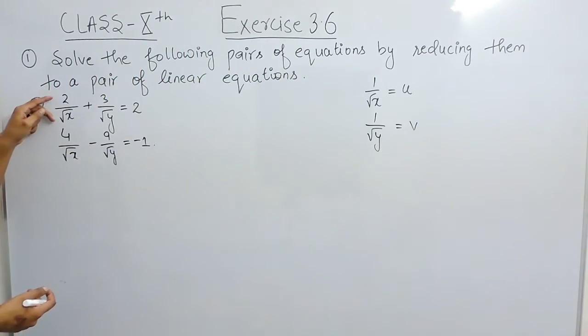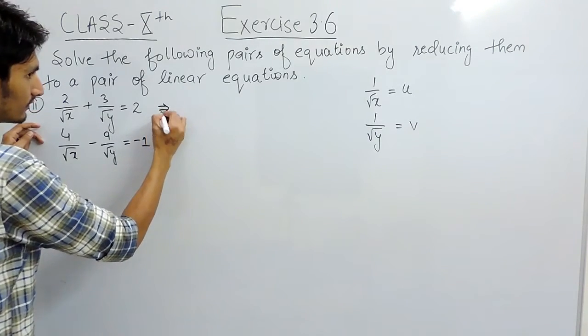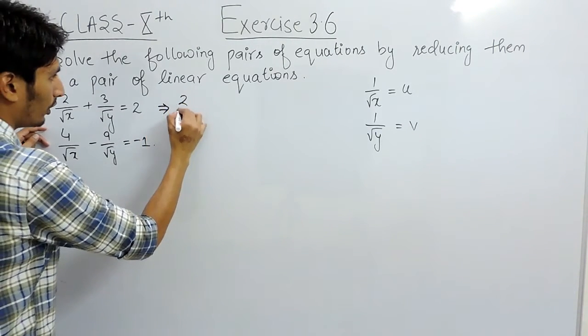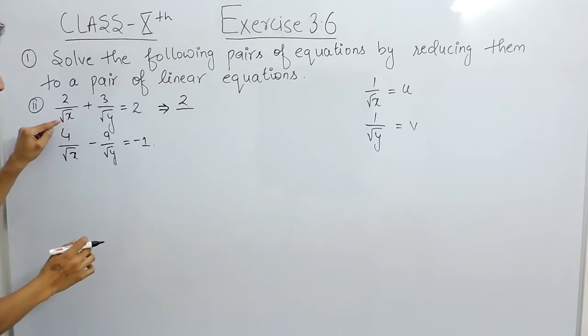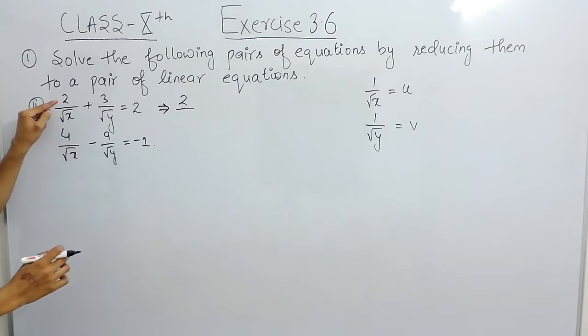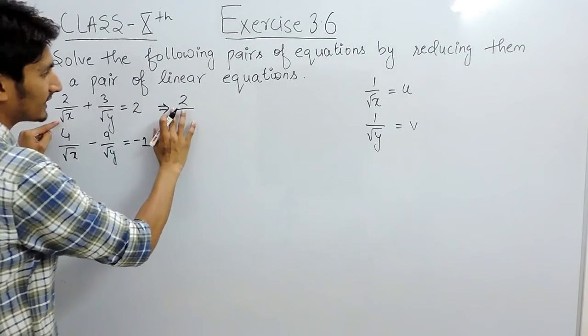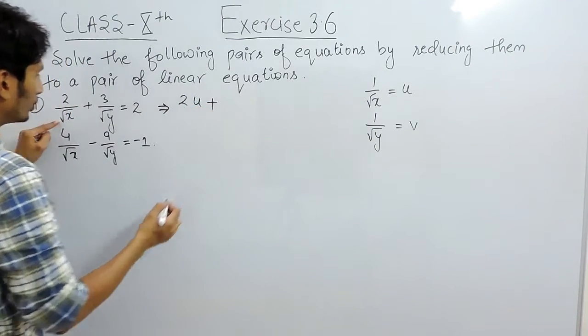So that we can write this equation as 2 upon root x, and we know that 1 upon root x is basically u. So this is 2u.